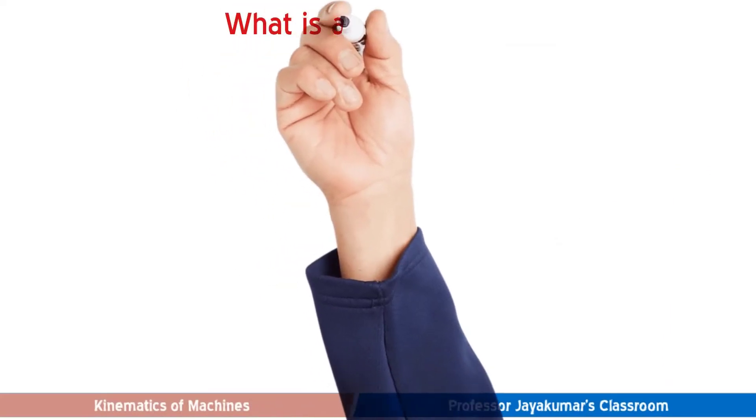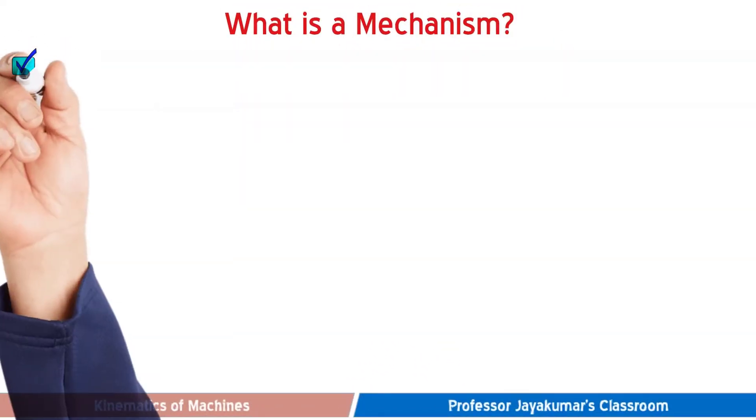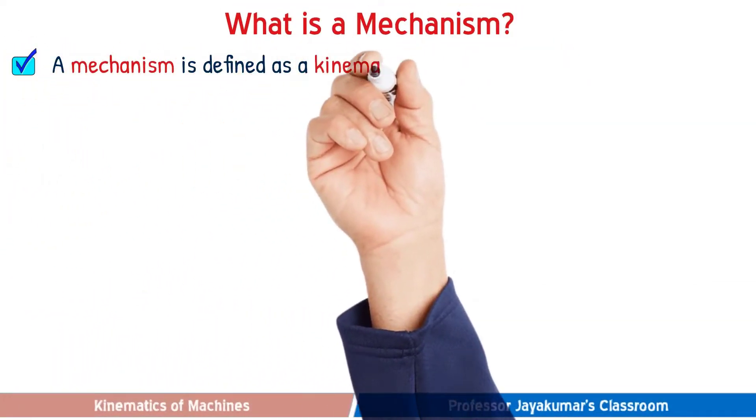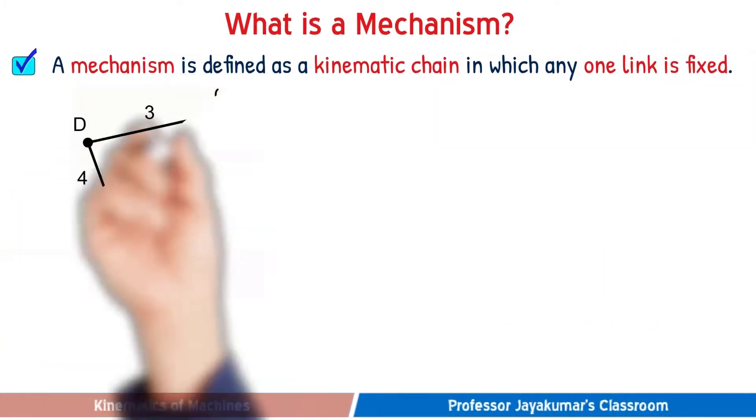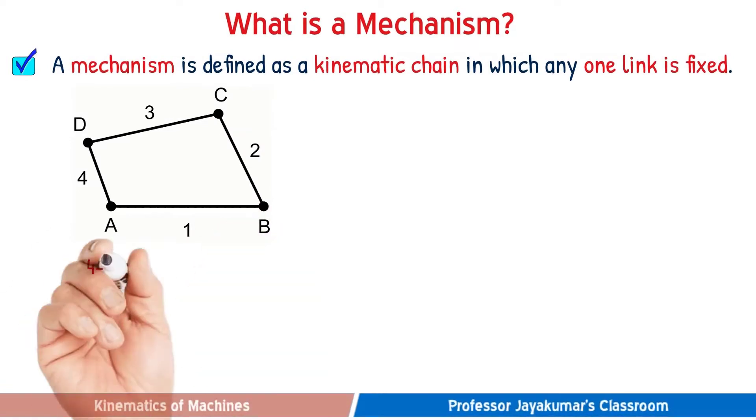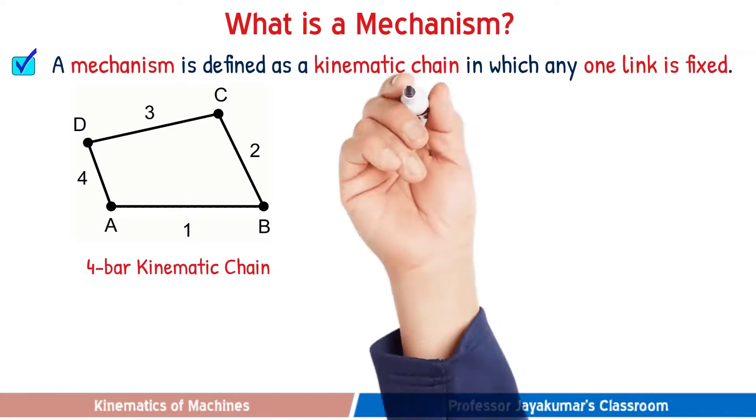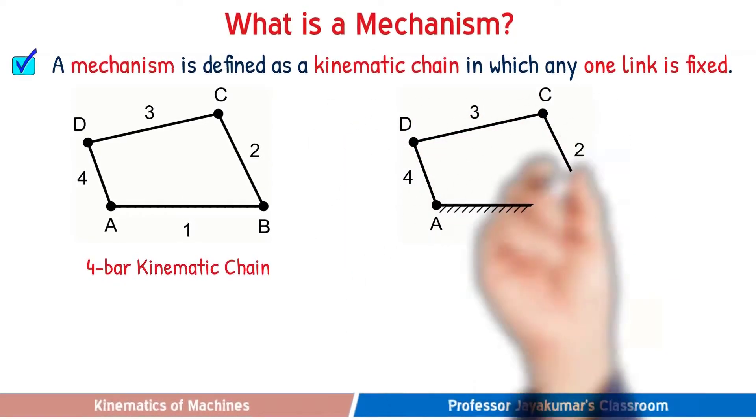What is a mechanism? A mechanism is a kinematic chain in which any one link is fixed. Consider this 4-bar kinematic chain without any link having been fixed. If I fix any one link, say link 1 in this kinematic chain, now it becomes a mechanism. So, kinematic chain with any one link fixed becomes a mechanism.